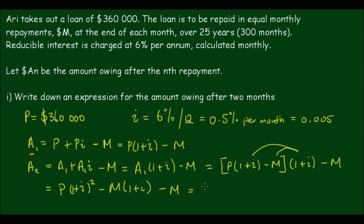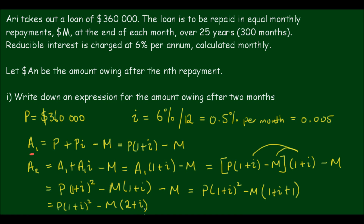If we now simplify this equation, we'll get P times (1 + i) squared, then minus M times (1 + i) — expanding the (1 + i) in — then minus M. Collecting like terms of M, we get P(1 + i)² minus M(2 + i). Substituting values in: 360,000 times 1.005 squared, minus M times 2.005.